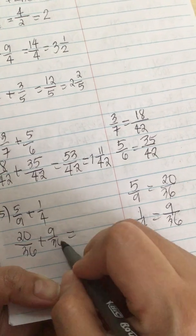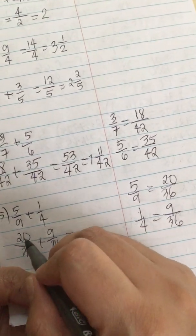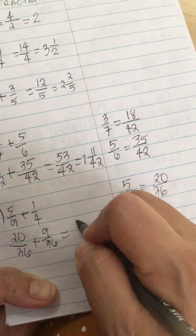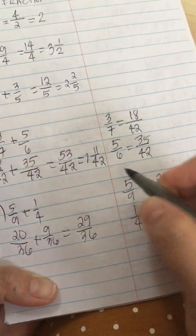Now that they have the same denominator, we can add them. So 20 plus 9 is 29 over 36.